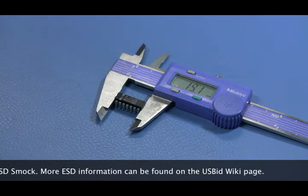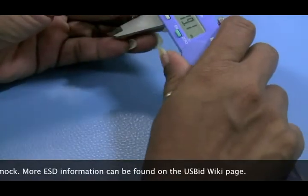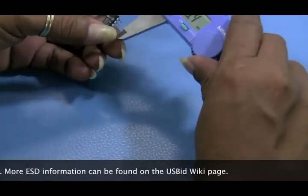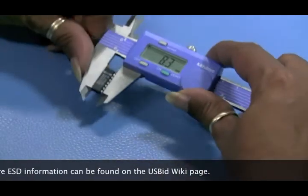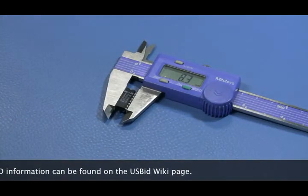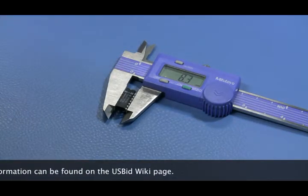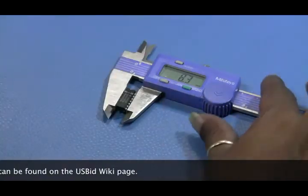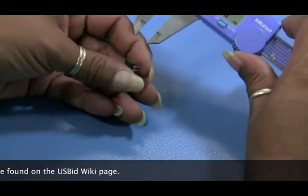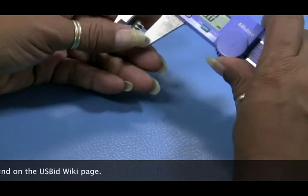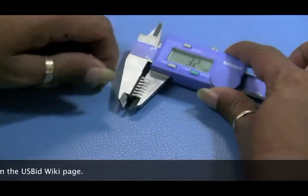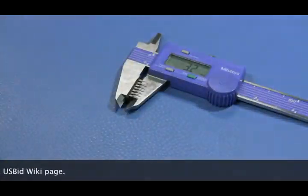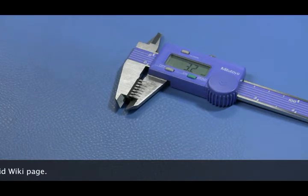After verifying the length of the part, we'll then take a measurement of the width of the part. After that we will then take a measurement and photograph of the height of the part. These dimensions again will also be verified against the manufacturer's data sheet.